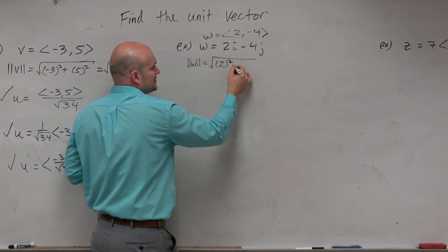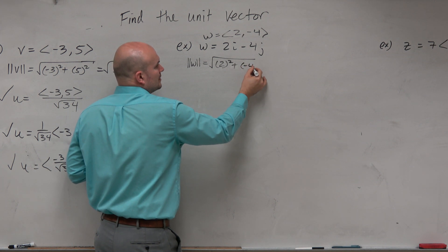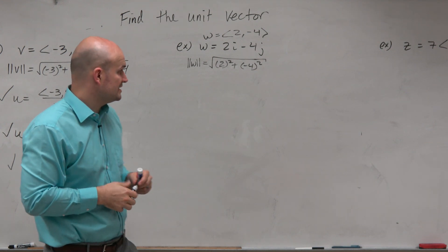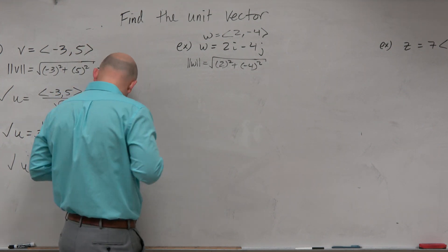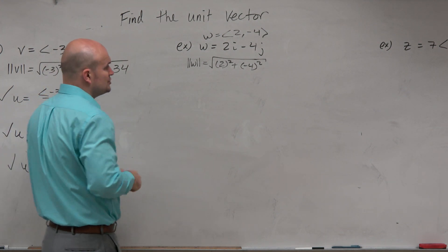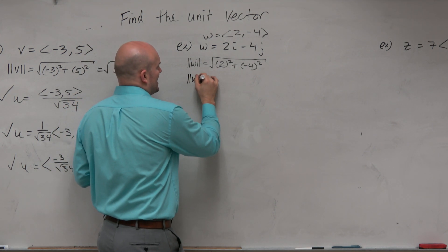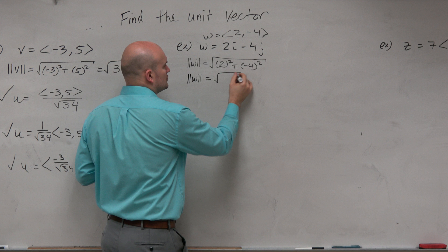So to find the magnitude, you're just going to take the square root of the sum of the square of the first component and the square of the second component, which 2 squared is 4, negative 4 squared is 16. So therefore, I get a magnitude of 20.